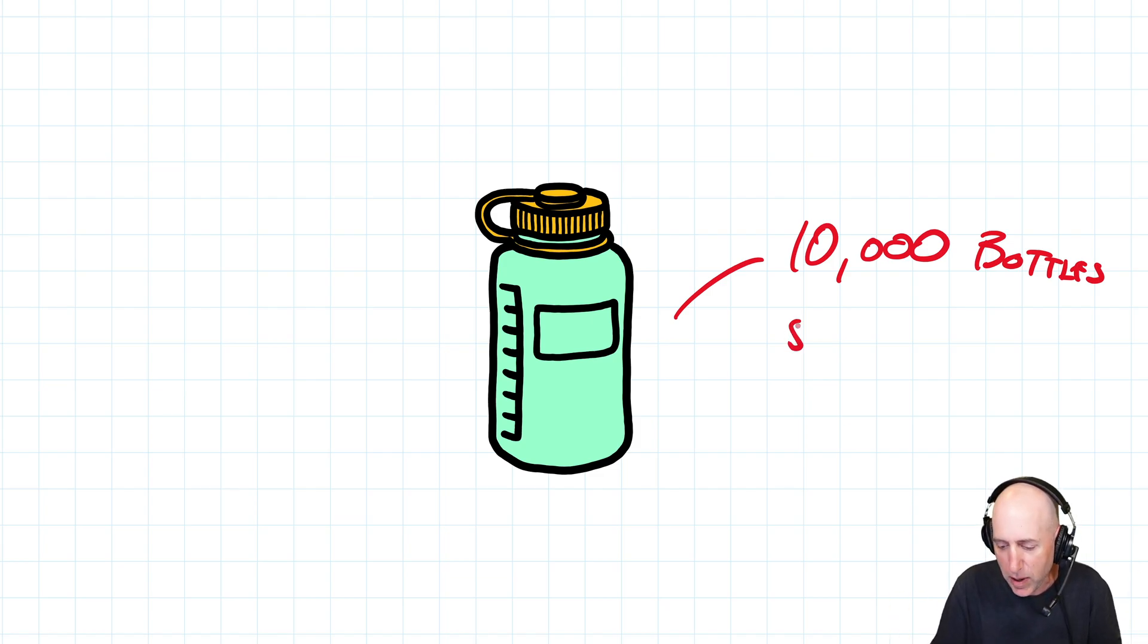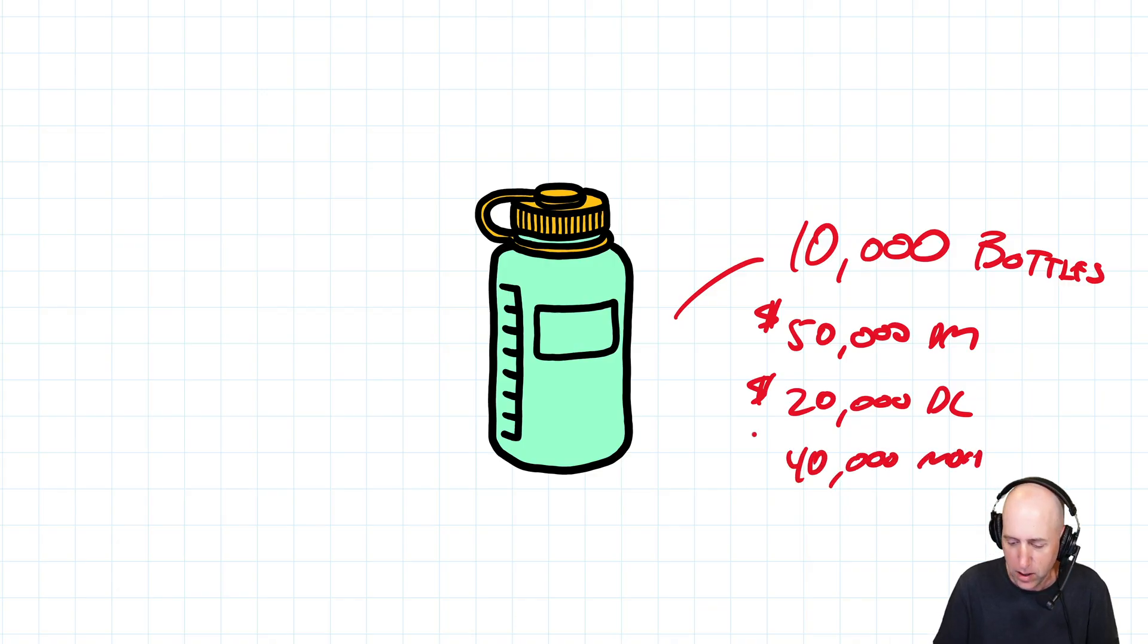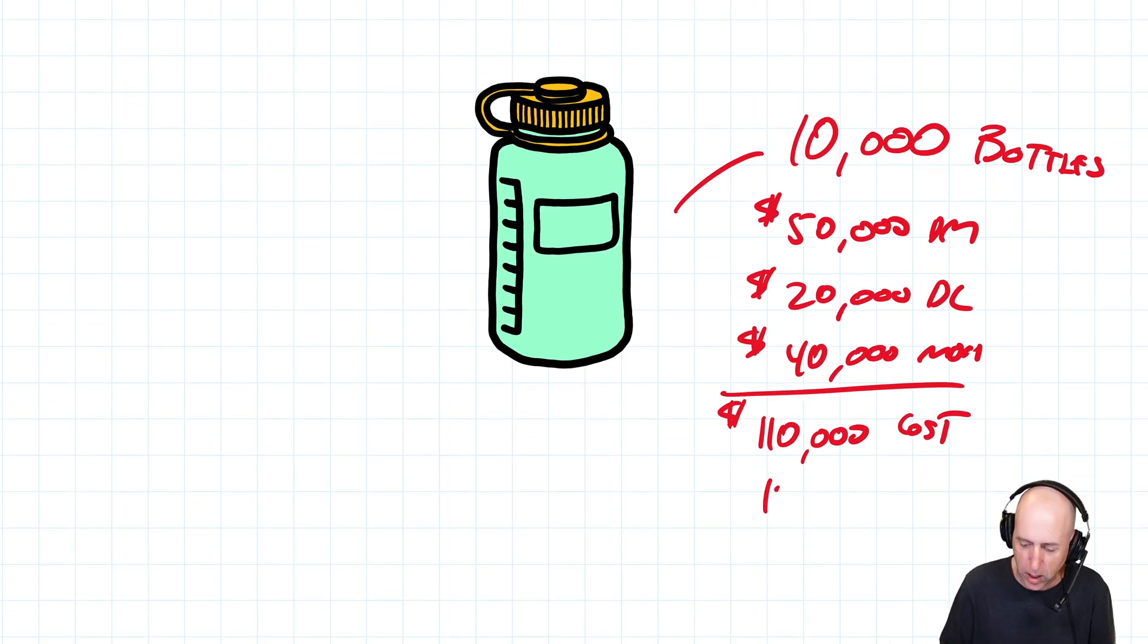Let's just say I spent 50 grand on DM direct material. I spent 20 grand on DL direct labor. And I applied, let's make the number 40,000 in overhead. So my total product cost here is $110,000. That's my product cost to make 10,000 bottles.